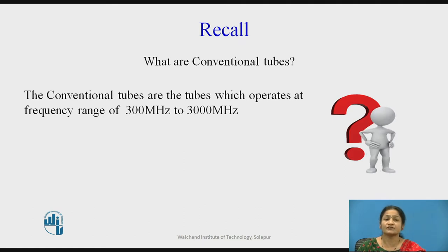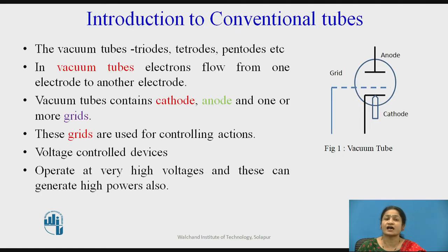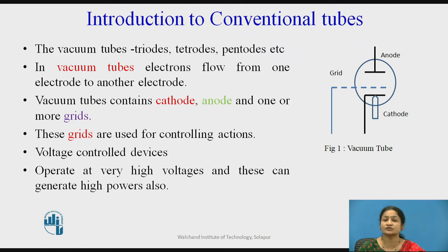These conventional tubes are nothing but vacuum tubes. We are familiar with vacuum tubes like triode, tetrode, and pentode. Nowadays we are not using these devices, but still there are some devices which use the principle of these devices, like CRT tubes or television tubes.